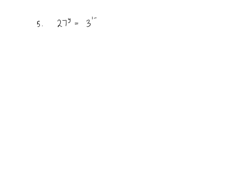For question 5, we have 27 to the power of y equals 3 to the power of 1 plus y. So 3 cubed to the power y equals 3 to the power 1 plus y, meaning 3 to the power 3y equals 3 to the power 1 plus y. Therefore 3y equals 1 plus y. Rearranging: 2y equals 1, so y equals a half.